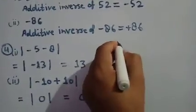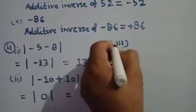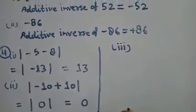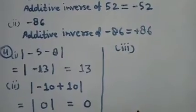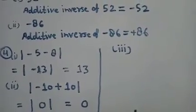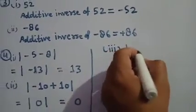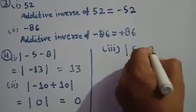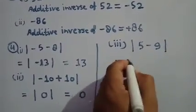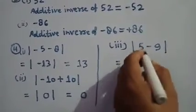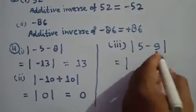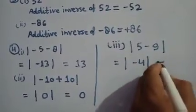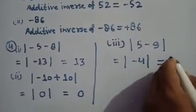Part number 3: The absolute value of 5 minus 9. First solve 5 minus 9, which gives minus 4. The absolute value of minus 4 is 4.